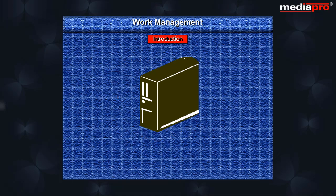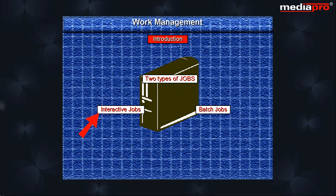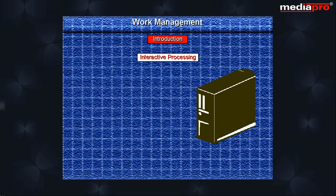Any work that enters the system is processed in one of two ways: interactive and batch. Interactive processing is one that requires continuous interaction between the user and the system. For example, from the moment a user signs on, he is continuously entering commands or menu options, and the system in turn responds to each user action until he signs off.